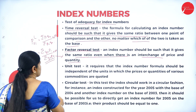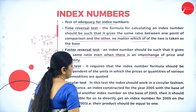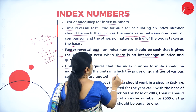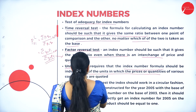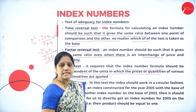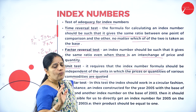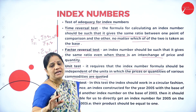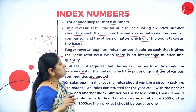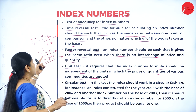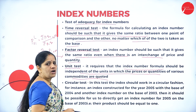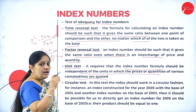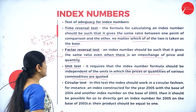The next test is the unit test. It requires that the index number formula should be independent of the units in which the prices or quantities of commodities are quoted. That means whatever the index number, it should not be dependent on the units. Suppose the price is in rupees and the quantity is in kilograms or grams — the index number should not be affected by those units.